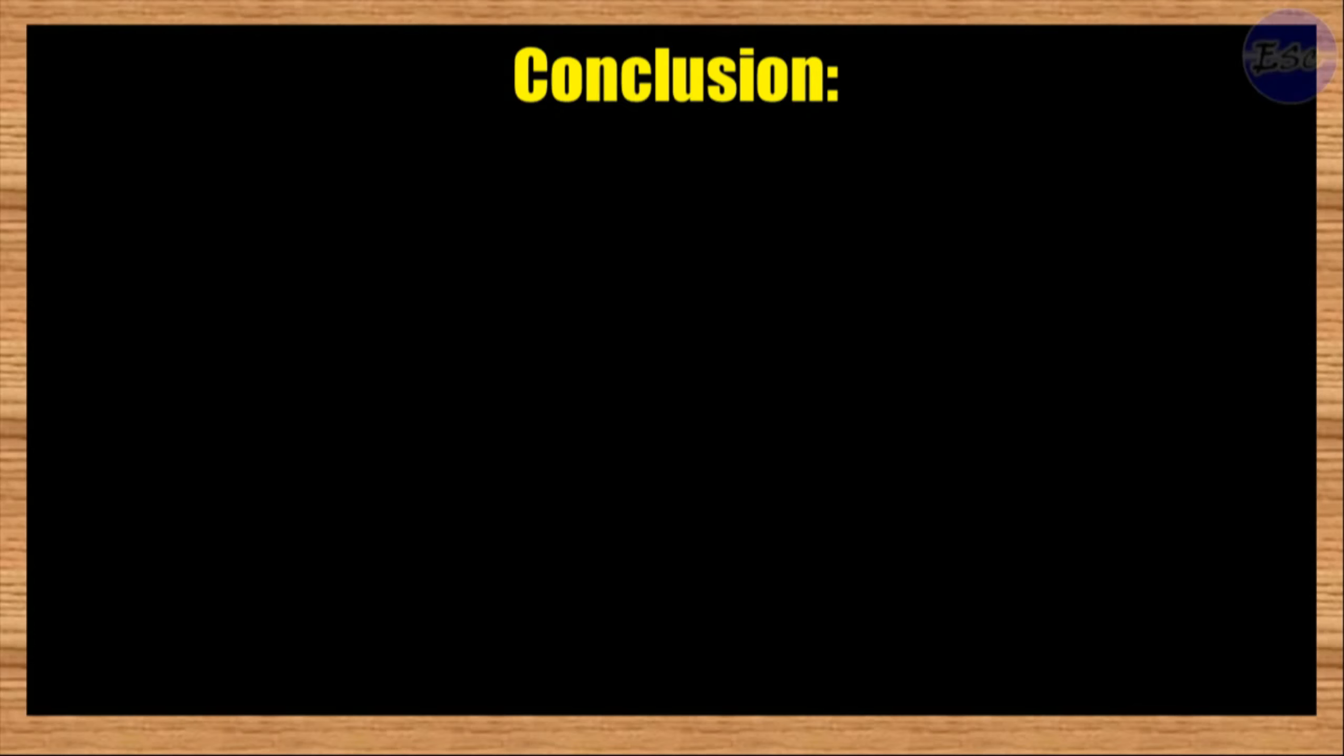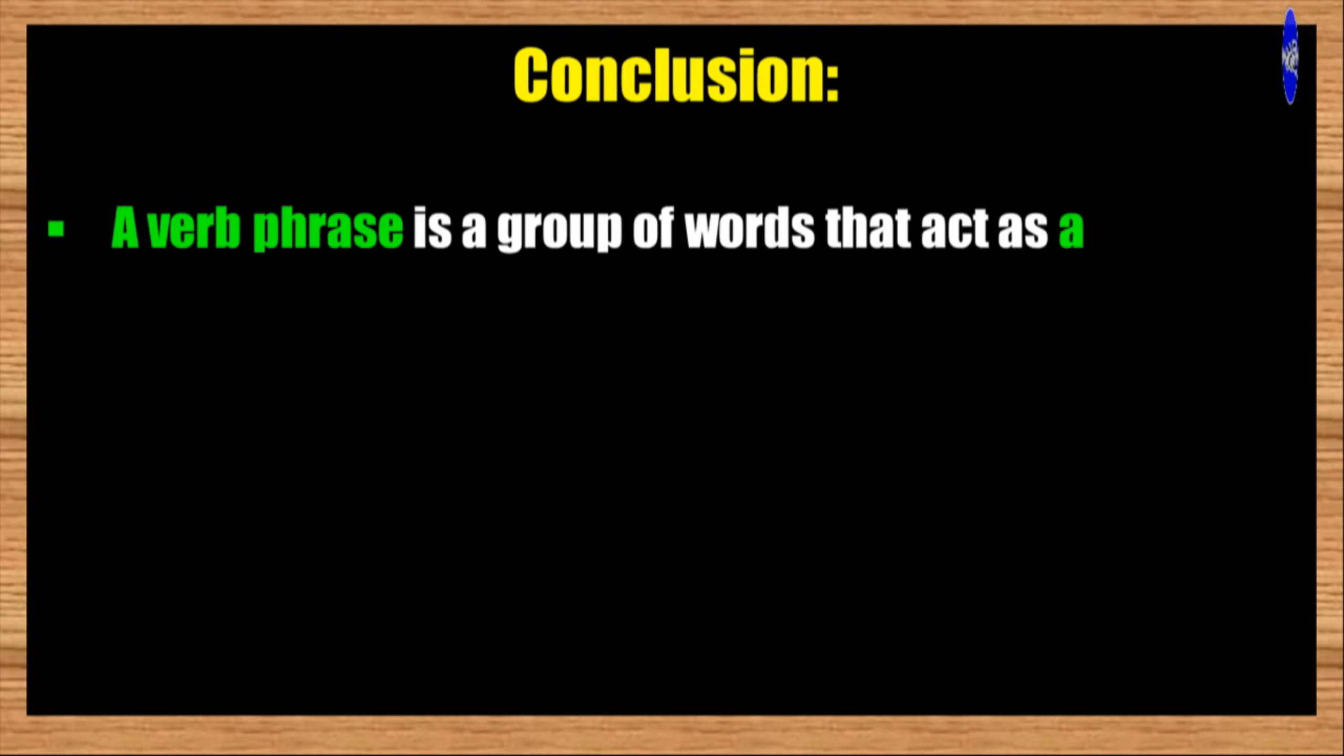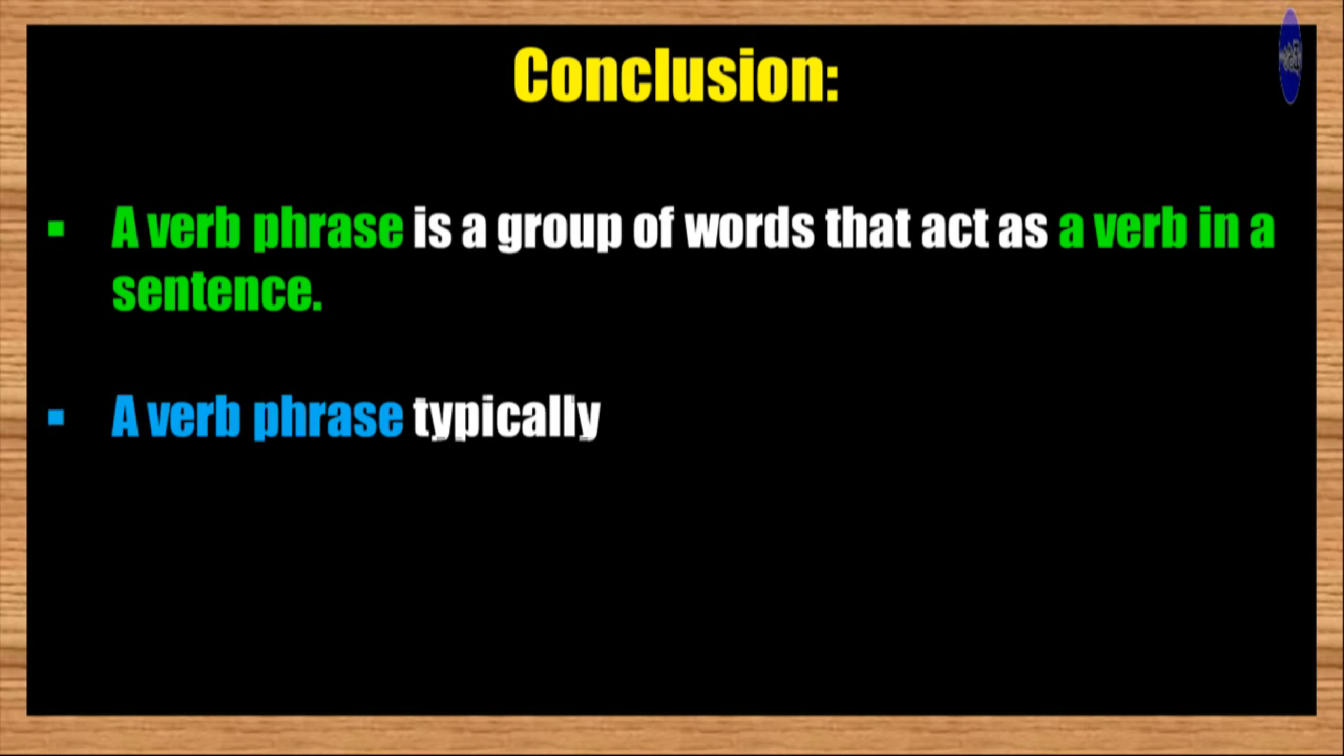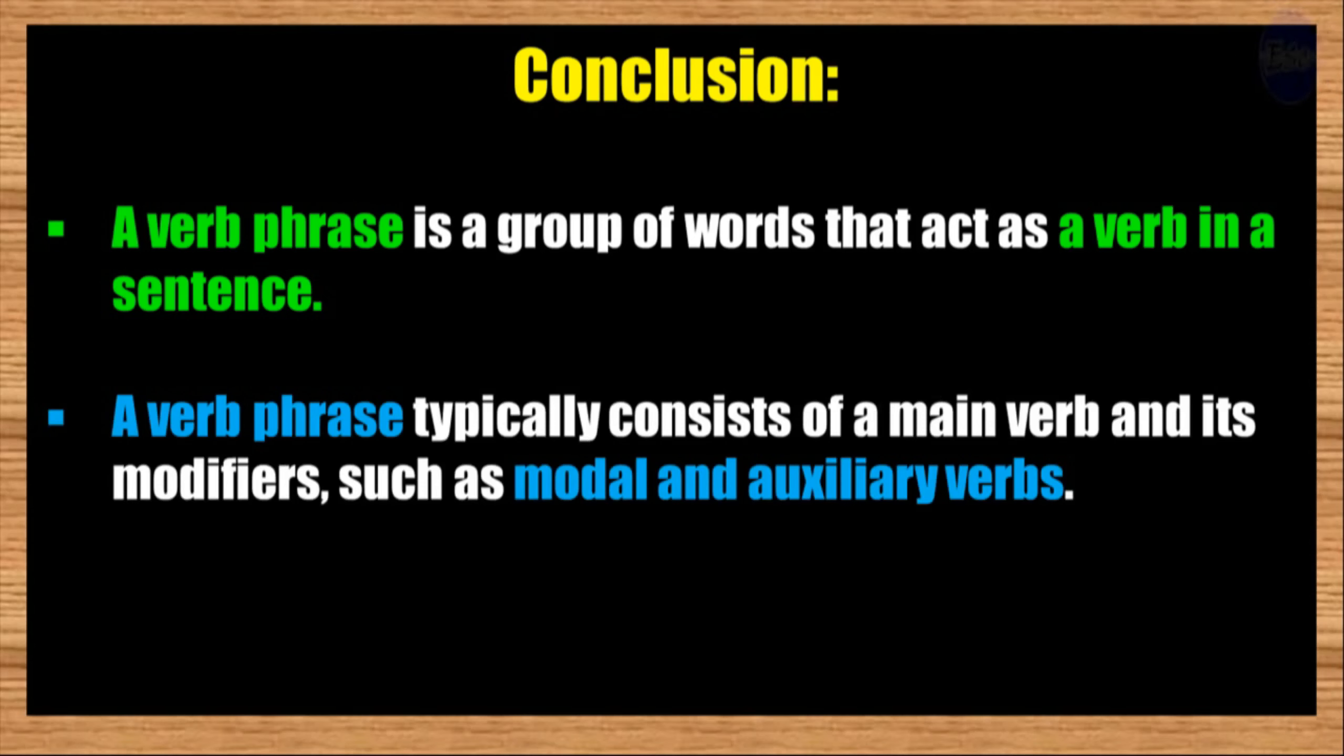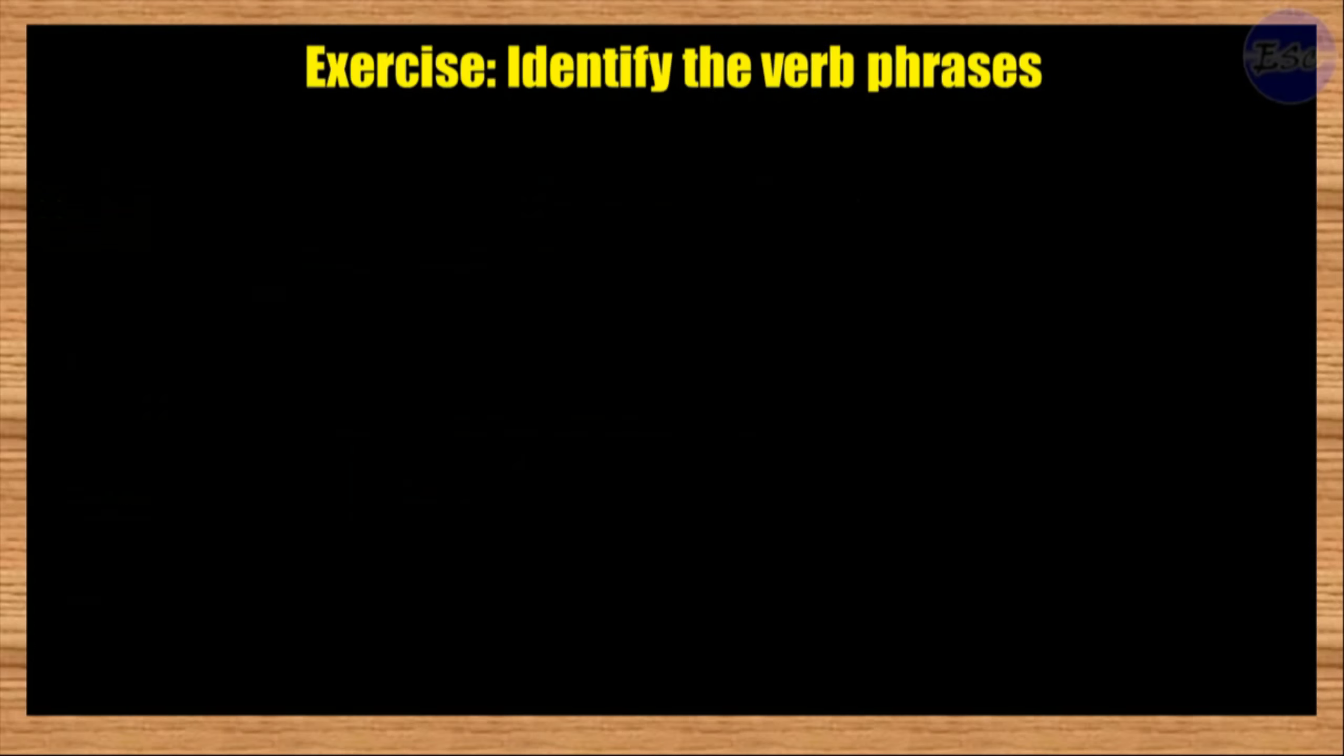Conclusion. A verb phrase is a group of words that act as a verb in a sentence. In addition, a verb phrase typically consists of a main verb and its modifiers, such as modal and auxiliary verbs.